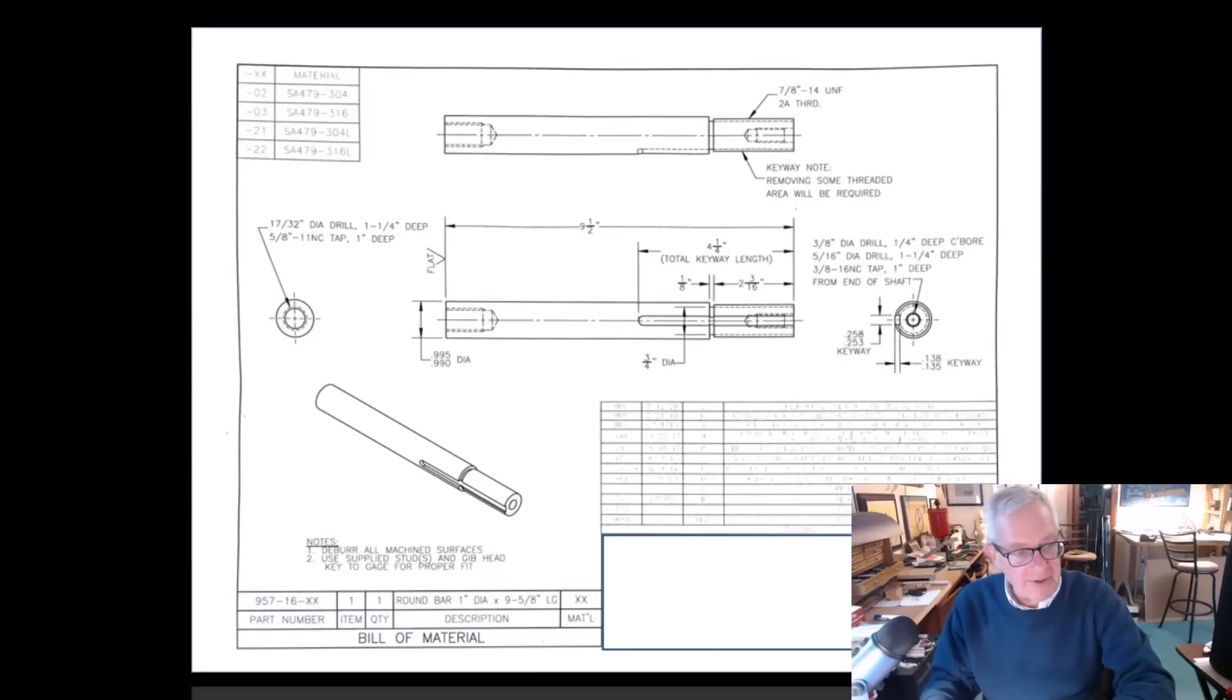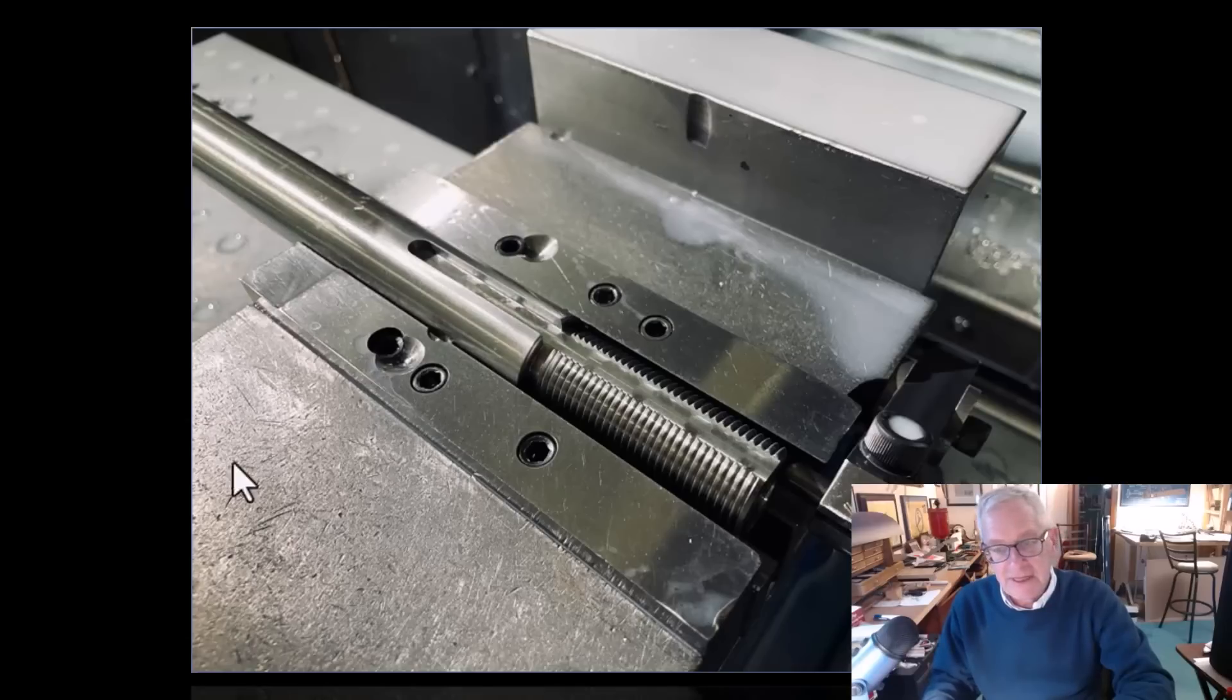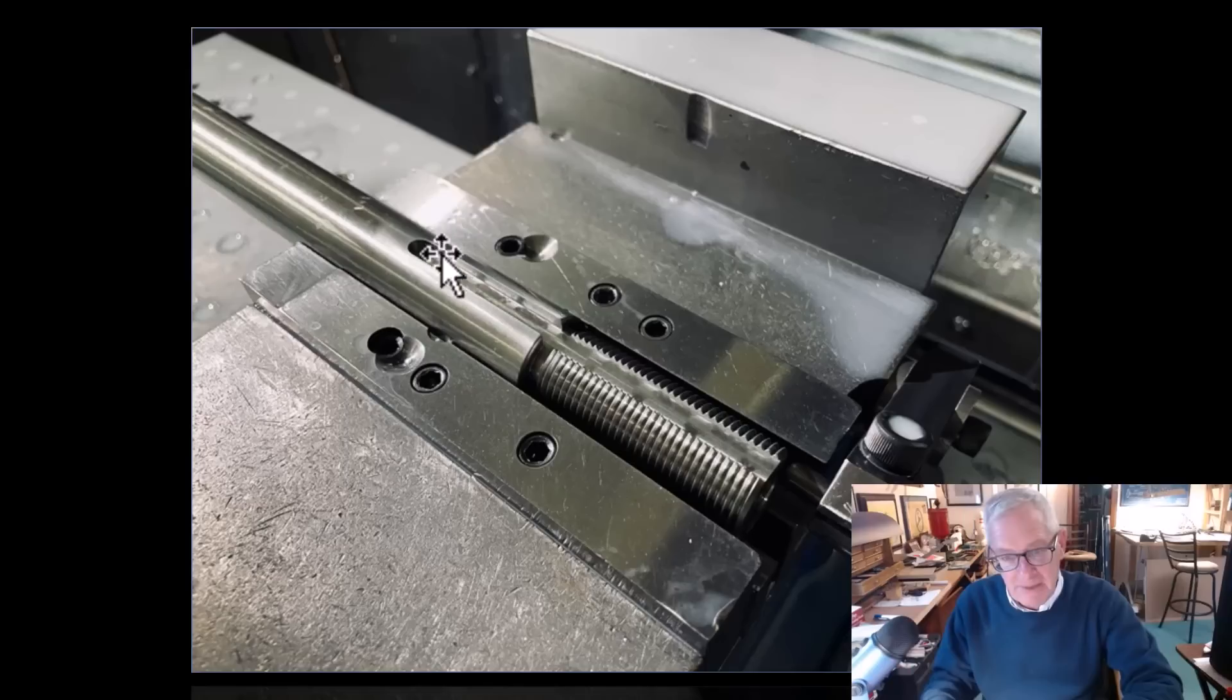This is what it looks like after I've machined it. I used all of my capabilities to do that, just a simple slot. But how are we going to measure the depth? Well, you really can't put a pair of depth mics on here and get them straight on a round shaft. It doesn't work.